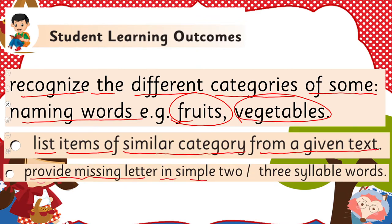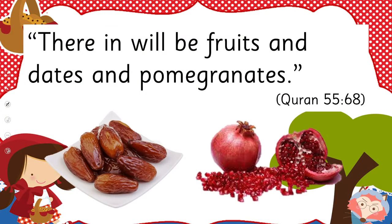Our learning objectives for today are: list items of similar category from a given text, and provide the missing letter in simple two or three syllable words. These are our today's lessons. Let's start with the name of Allah Subhanahu wa Ta'ala, who mentions in the Quran, Surah 55, verse 68.